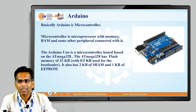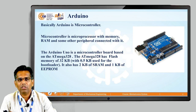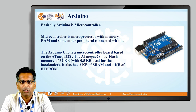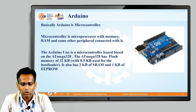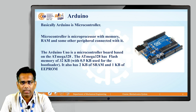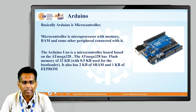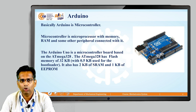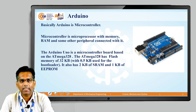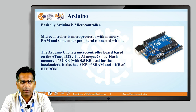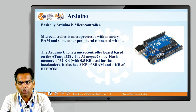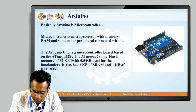Arduino is nothing but a simple microcontroller. The famous one we are going to use is Arduino Uno. Arduino Uno is a microcontroller board based on Atmega 328. The Atmega 328 has a flash memory of 32 KB, with 0.5 KB used for the bootloader. It has 2 KB of SRAM (static random access memory) and 1 KB of EEPROM (electrically erased programmable read-only memory).